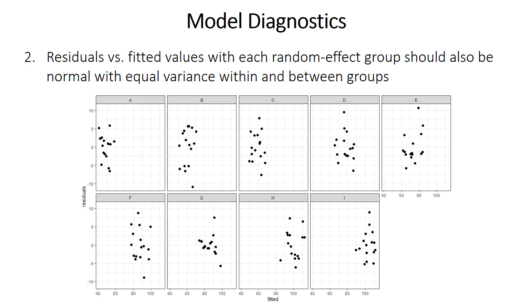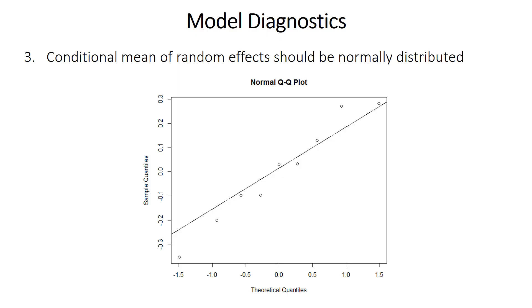If you have small sample sizes in some of your groups, it can be very hard to tell if the variance is similar, and it's also a caution about interpreting your results. The means of the random effects — or the conditional means, their mean relative to the overall mean — so the mean of the slope values and mean of the intercept values, should also be normally distributed because they're being drawn from a single common distribution. You can evaluate this with Q-Q plots to see if it more or less follows the theoretical quantile line.